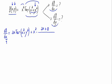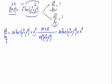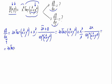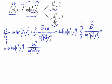Divided by cosine squared of what we had inside. This gives us 2x times the tangent of x squared plus y squared, plus x squared times 2x divided by cosine squared of x squared plus y squared. That simplifies to 2x times the tangent of x squared plus y squared, plus 2x cubed divided by cosine squared of x squared plus y squared. This is the partial derivative of f with respect to x.